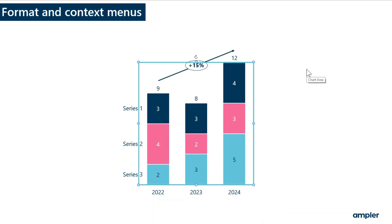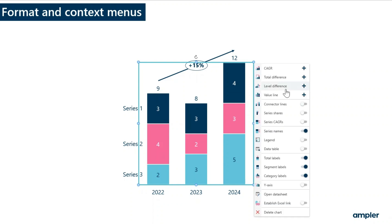When adding one of these, you'll see the menu closes. In the lower part of the menu, you'll find other decorator types such as connector lines, series shares, and so on. These can be toggled on and off, and the menu stays open until you click the left side of the button.